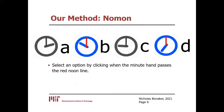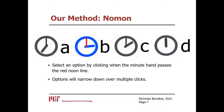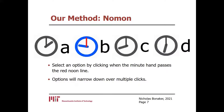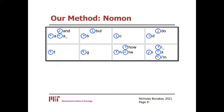I'll press again on the B clock. When the software is confident in my desired clock, it makes a selection. In this case, the B clock is the only remaining blue clock, so it was selected. The number of clicks needed to make a selection can vary — it is determined by my precision in clicking when the minute hand passes noon on my desired clock. In the keyboard application, options extend to include characters and word completions that facilitate typing. We have a demo of our keyboard application available here, and we encourage you to try it out.